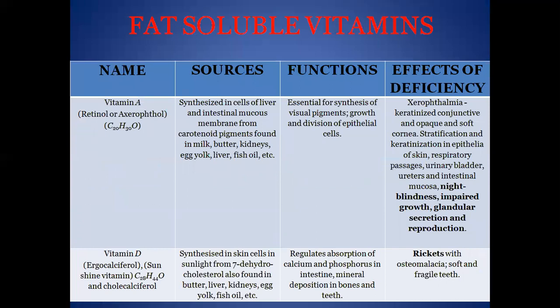Now coming to fat-soluble vitamins. Vitamin A, called retinol, is sourced from carotene pigment found in milk, butter, egg yolk, and liver. Its function is that it is essential for the synthesis of visual pigments and for the growth and division of epithelial cells.